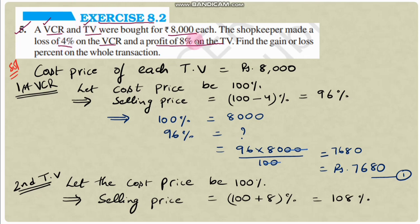The shopkeeper made a loss of 4% on the VCR when selling it, and a profit of 8% on the TV. We need to find whether the overall transaction gives profit or loss, and also find the profit or loss percentage.